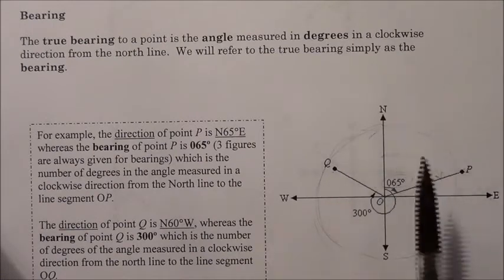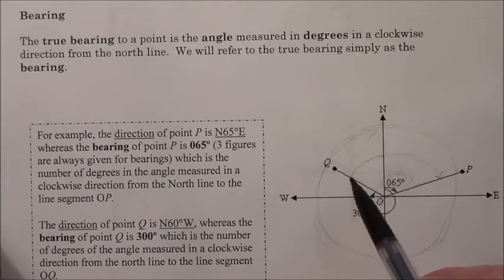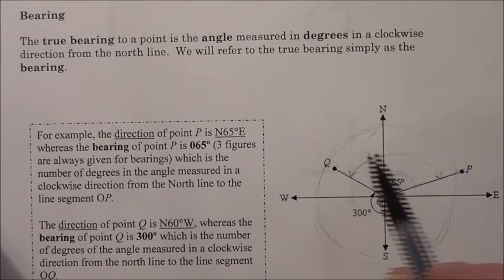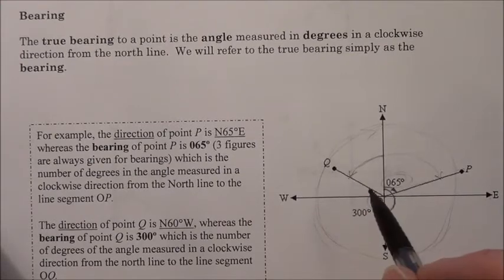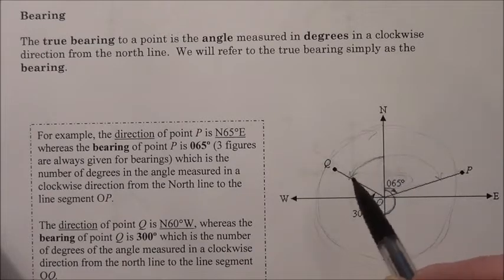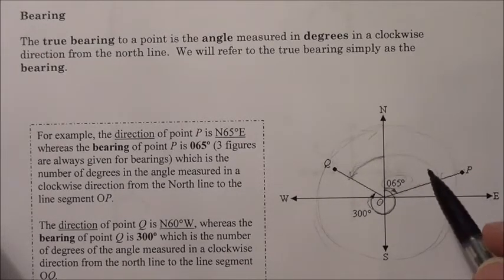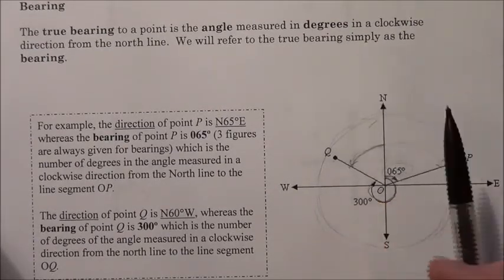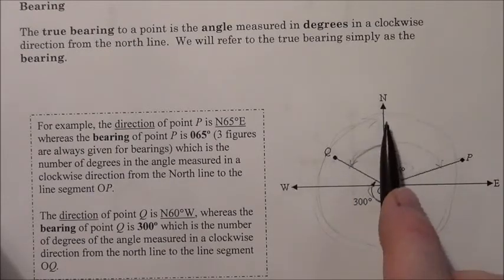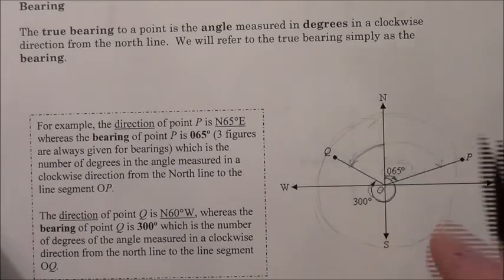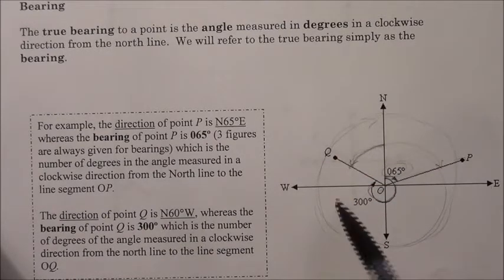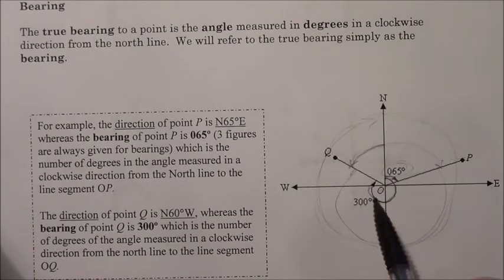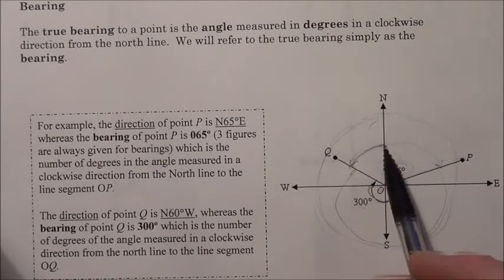For point Q, we start at north and rotate clockwise until we reach line segment OQ. That angle is 300 degrees, which means what's left over is 60 degrees, because the full circle is 360 degrees. In cardinal directions, that is north 60 degrees west. But the bearing of Q is 300 degrees, because that's how far you rotate clockwise from north to reach OQ.